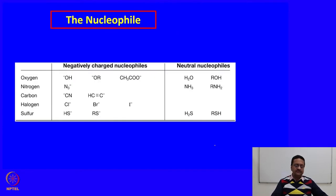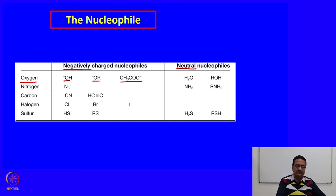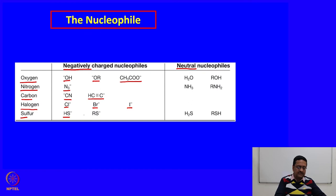When we try to understand what possible nucleophiles we may encounter, there are two different types: negatively charged nucleophiles and neutral nucleophiles. Negatively charged nucleophiles can be oxygen-based (OH minus, OR minus, carboxylate anions), nitrogen-based (like azides), carbon-based (like cyanide or acetylide), halogen-based (chloride, bromide, or iodide), and sulfur-based (SH minus or RS minus). Neutral nucleophiles include water and alcohols for oxygen-based, ammonia or other amines for nitrogen-based, and H₂S or RSH for sulfur-based.